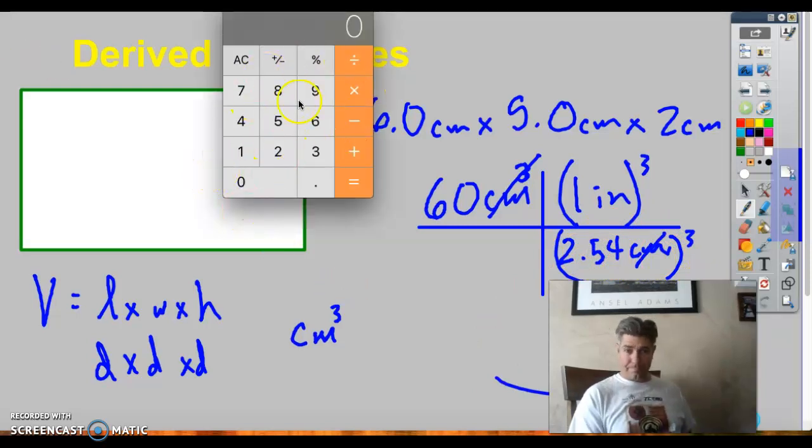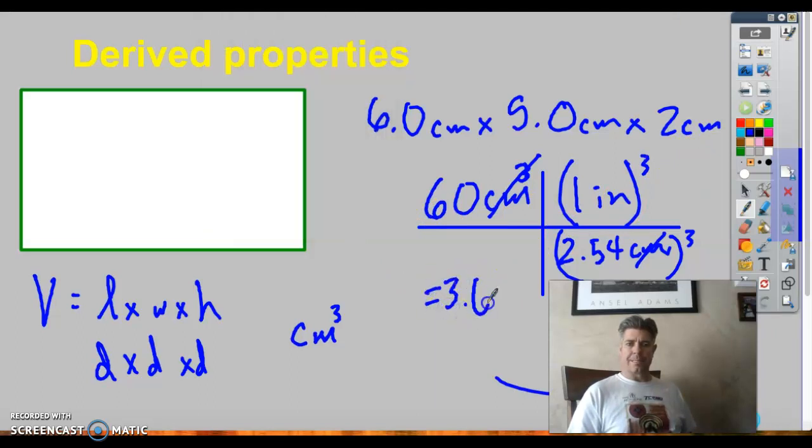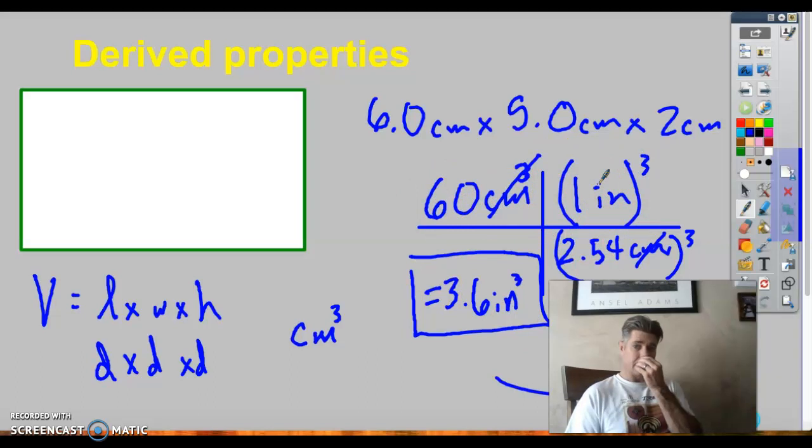So this would be, to calculate this out using my calculator, 60 divided by 2.54 three times. So 60 divided by 2.54 divided by 2.54 divided by 2.54. It would give me 3.6 cubic inches. Inches cubed. It would be the same as 60 centimeters cubed. So just something to think about. When you're converting something that has three dimensions, you have to use the conversion that has three dimensions.